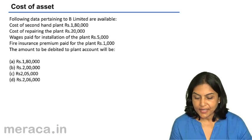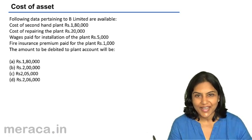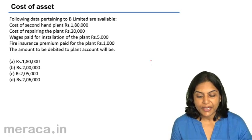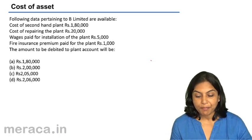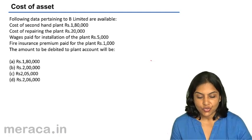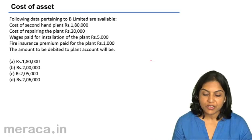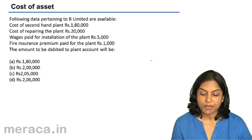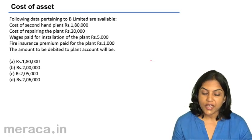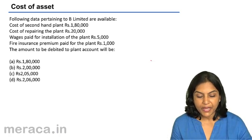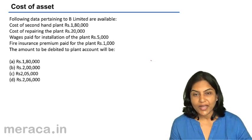Let us understand the cost of an asset through this exercise. Following data pertaining to B Limited is available: cost of the secondhand plant is 1,80,000; cost of repairing the plant is 20,000; wages paid for installation of the plant is 5,000; fire insurance premium paid for the plant is 1,000. What is the amount to be debited to the plant account? Is it A: 1,80,000; B: 2,00,000; C: 2,05,000; or D: 2,06,000?